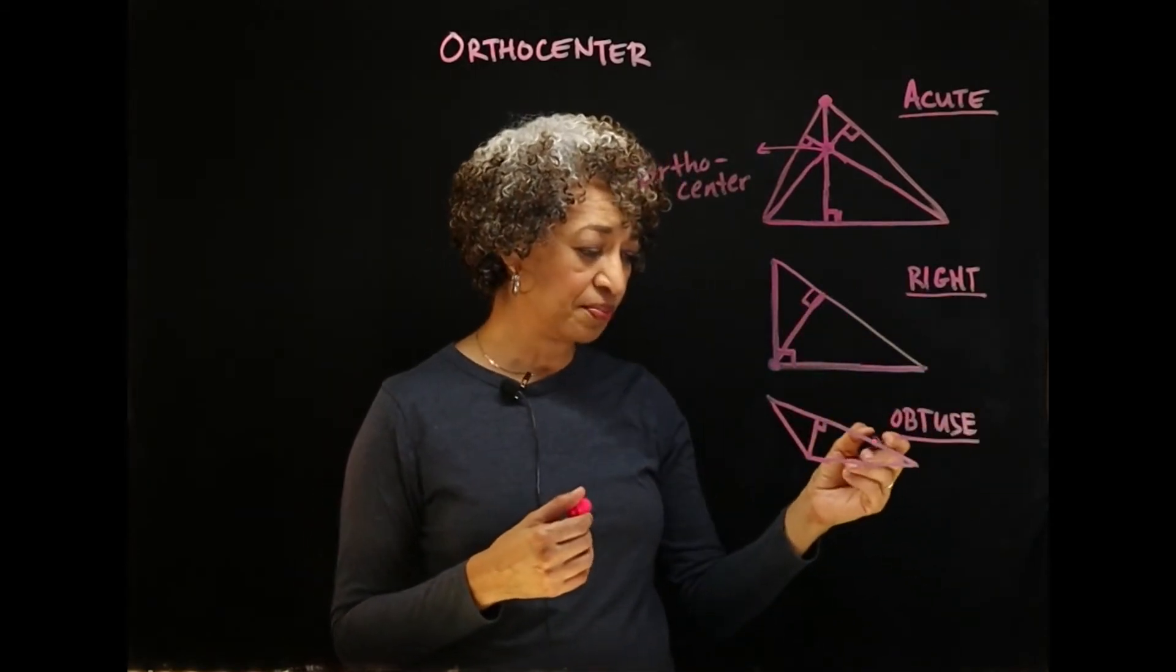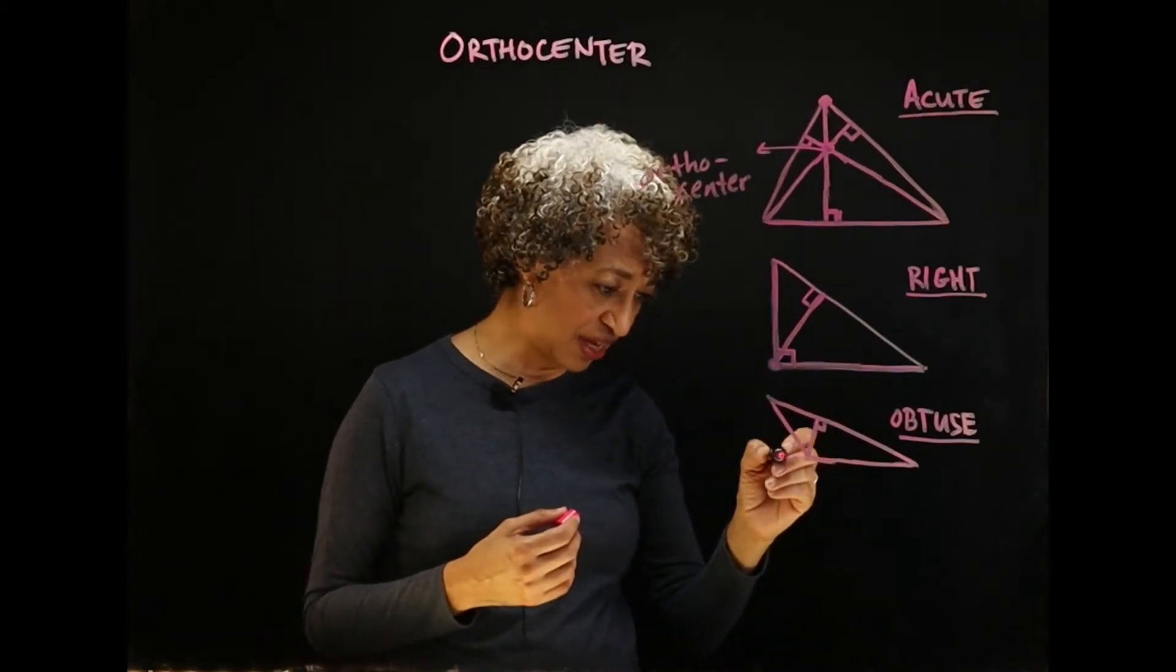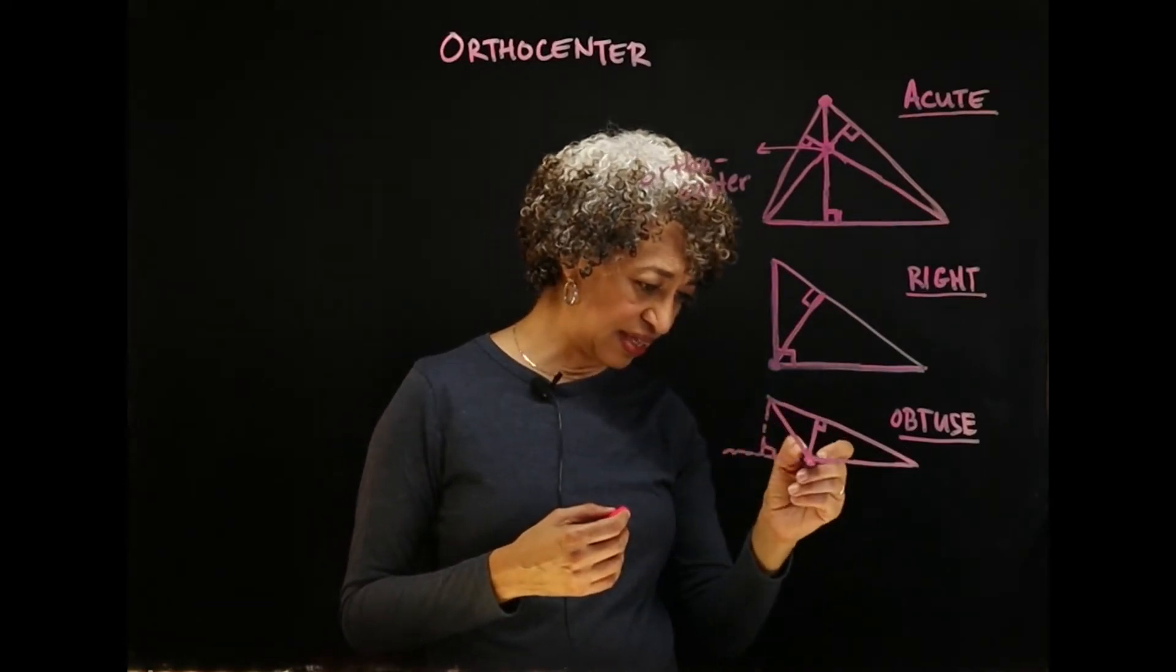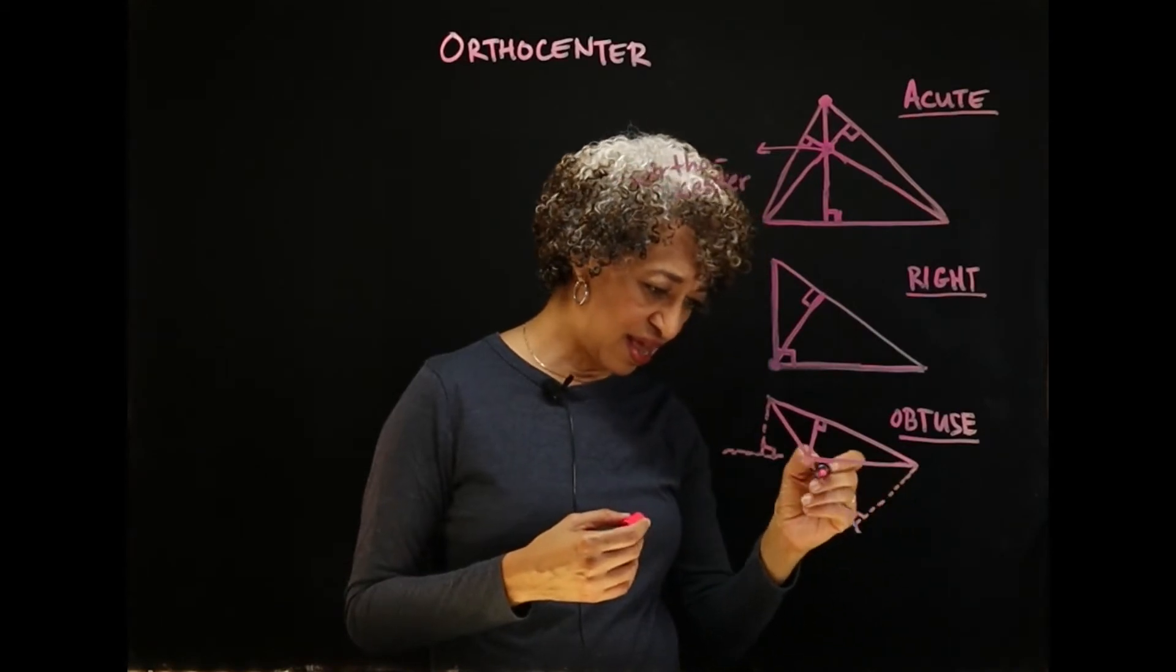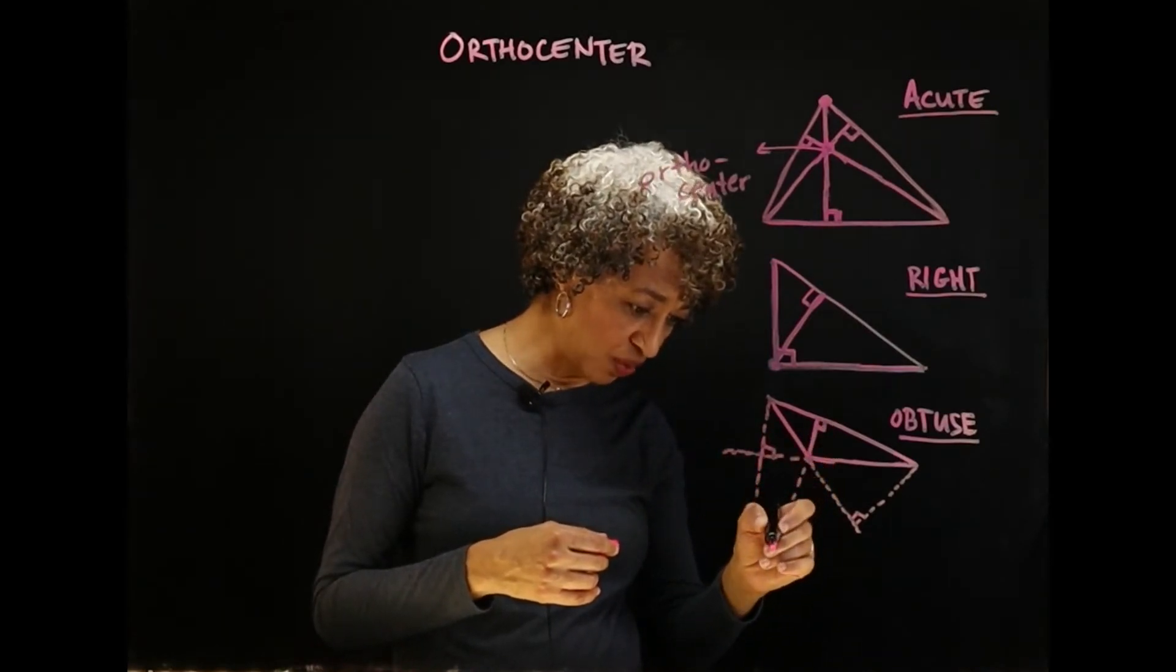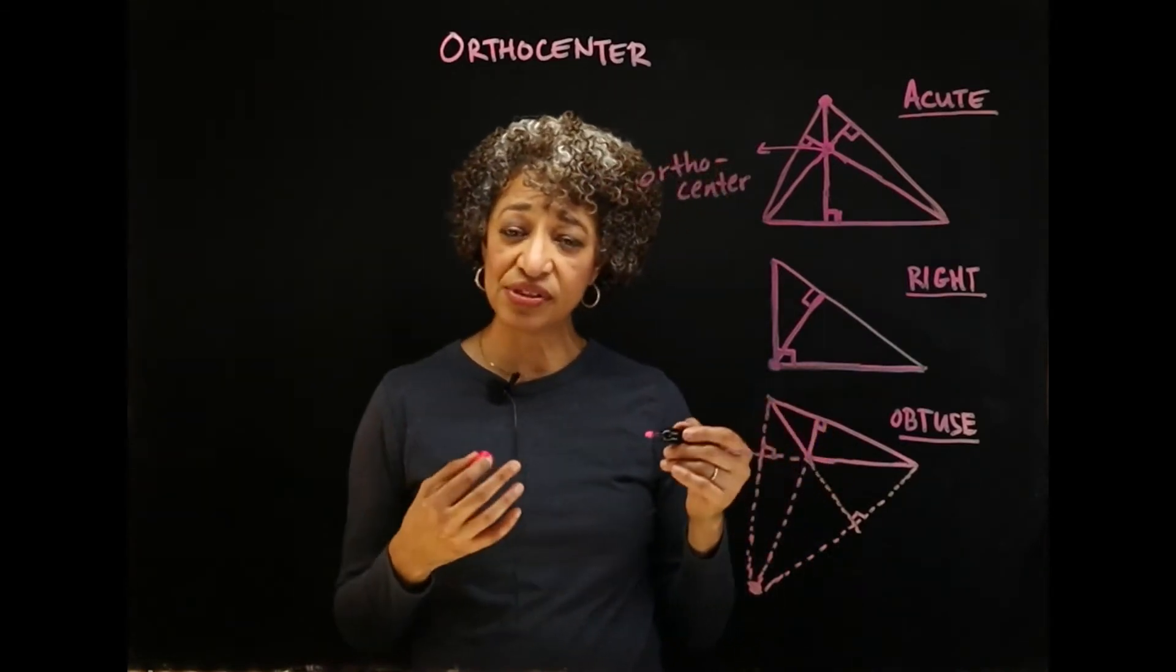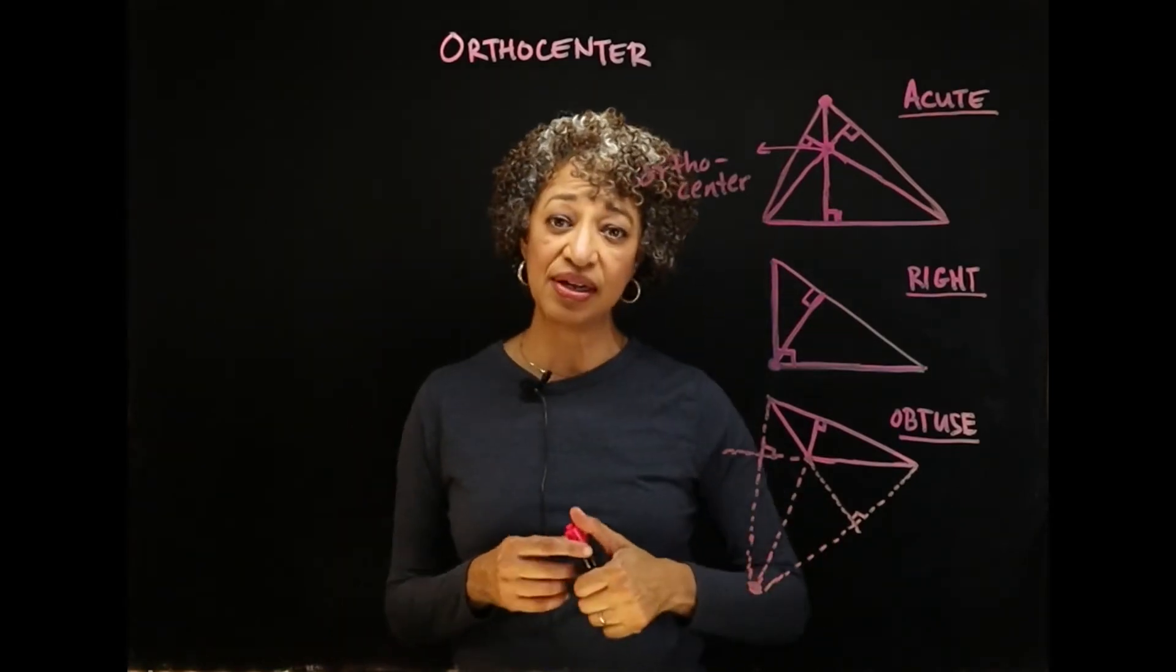Now with the obtuse triangle I've drawn in one of the altitudes for you but the other altitudes lie outside of the triangle. I'm extending this side and this is an altitude. And it makes a right angle. If I extend this side, then we get another altitude here. And it seems they don't meet but if I keep going, they will eventually meet here outside of the triangle. So the orthocenter of an obtuse triangle is outside of the triangle. So that's a little bit about what the orthocenter is.